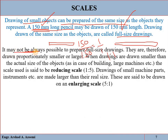It is not always possible to prepare a full size drawing. For example, if we have a horse, we cannot draw its actual dimension because the sheet size is less than the actual dimension, so we reduce it. Similarly, if you are drawing an ant, its dimension is very small — if drawn at actual dimension it will look very small and not properly visible, so we increase the size. Therefore, we must proportionally reduce or increase the dimension.